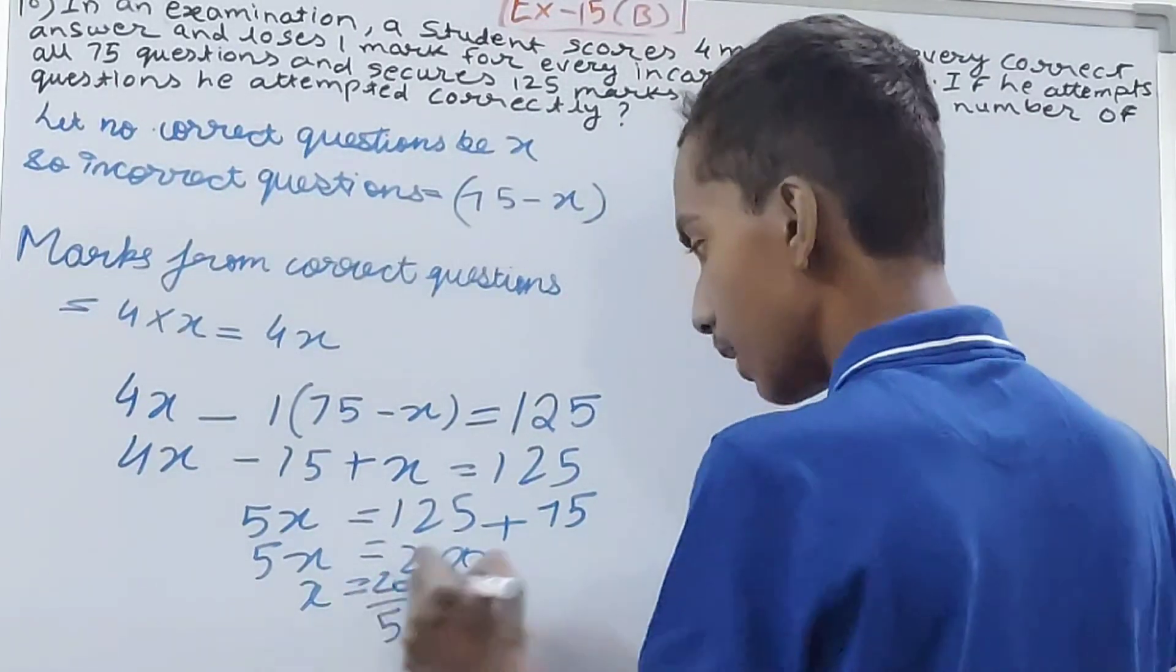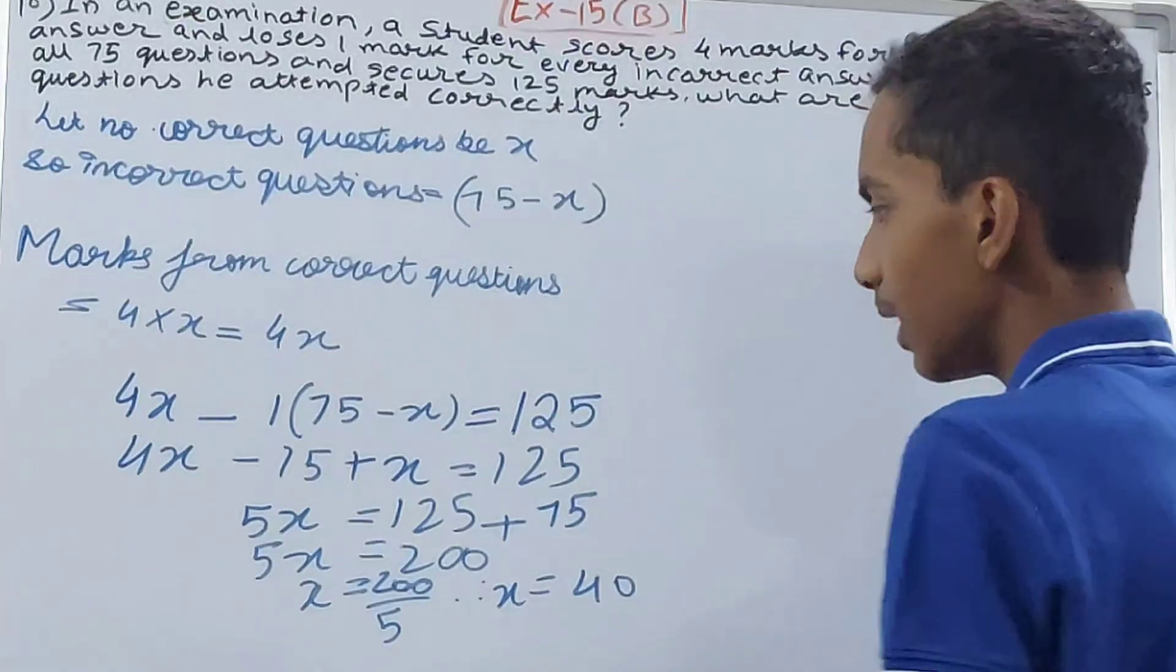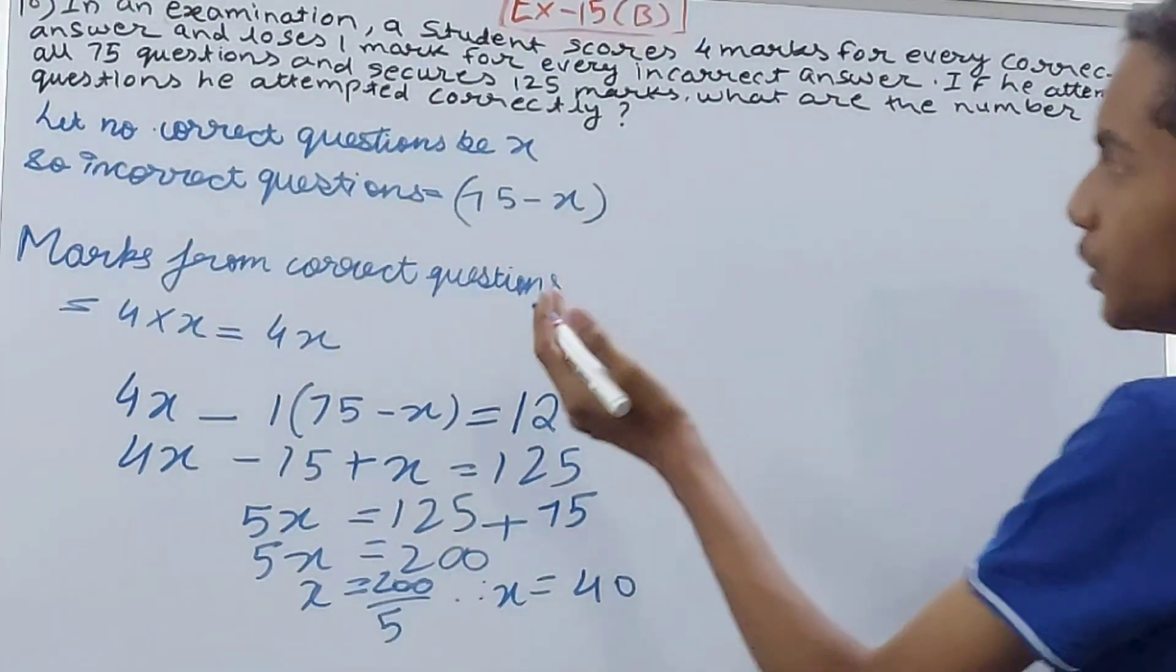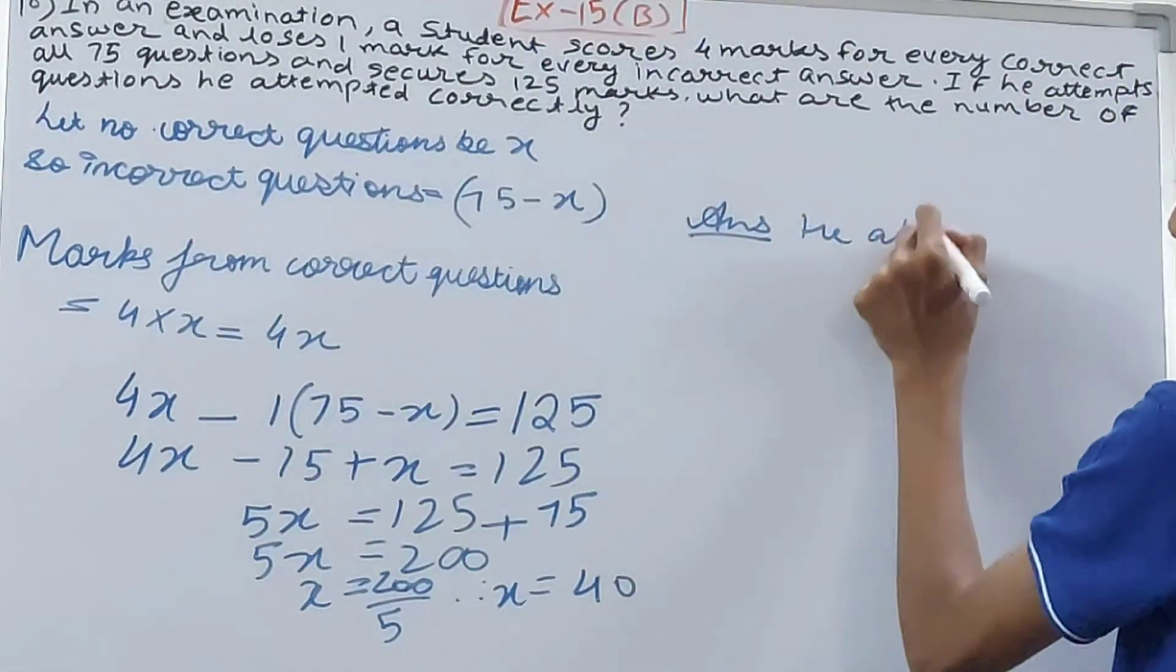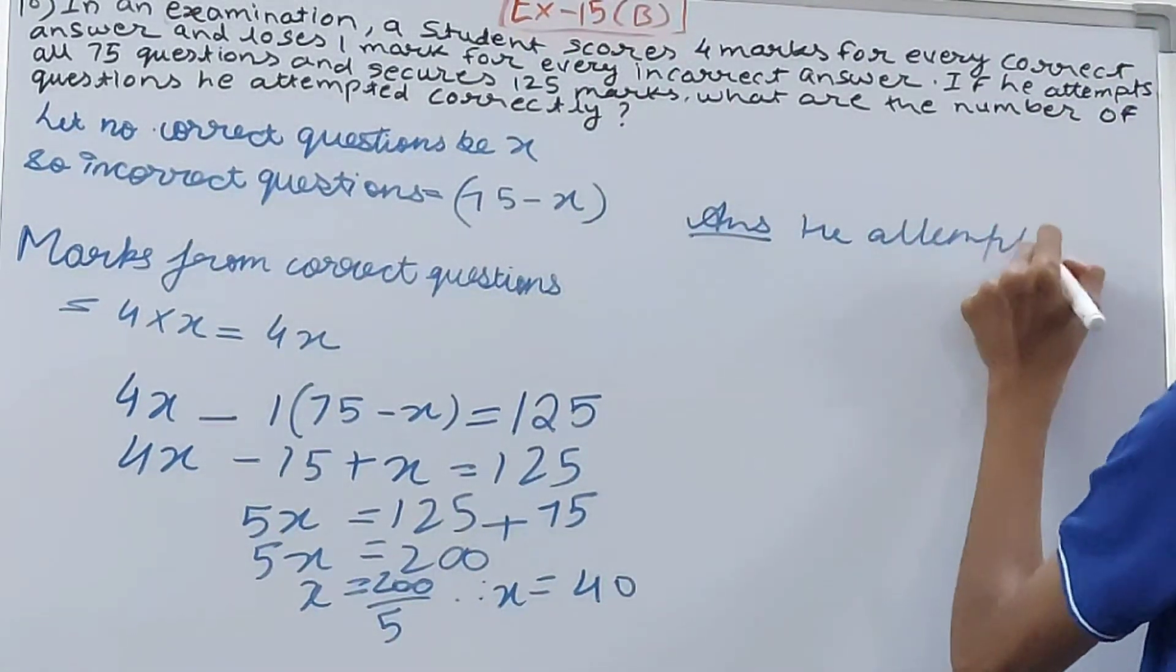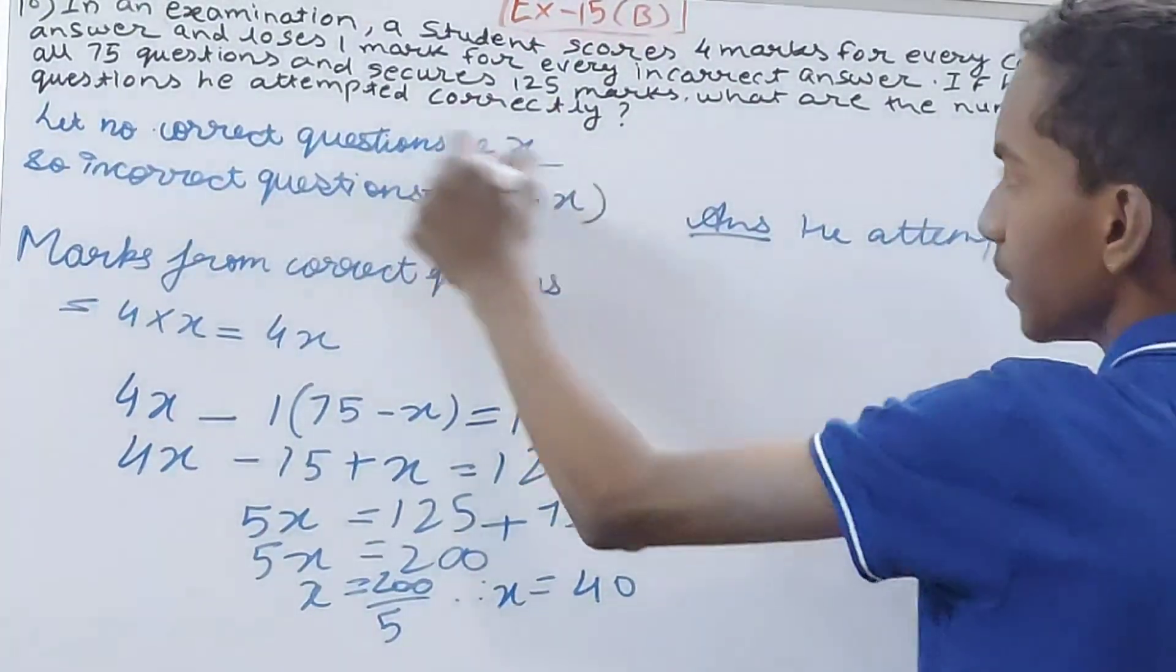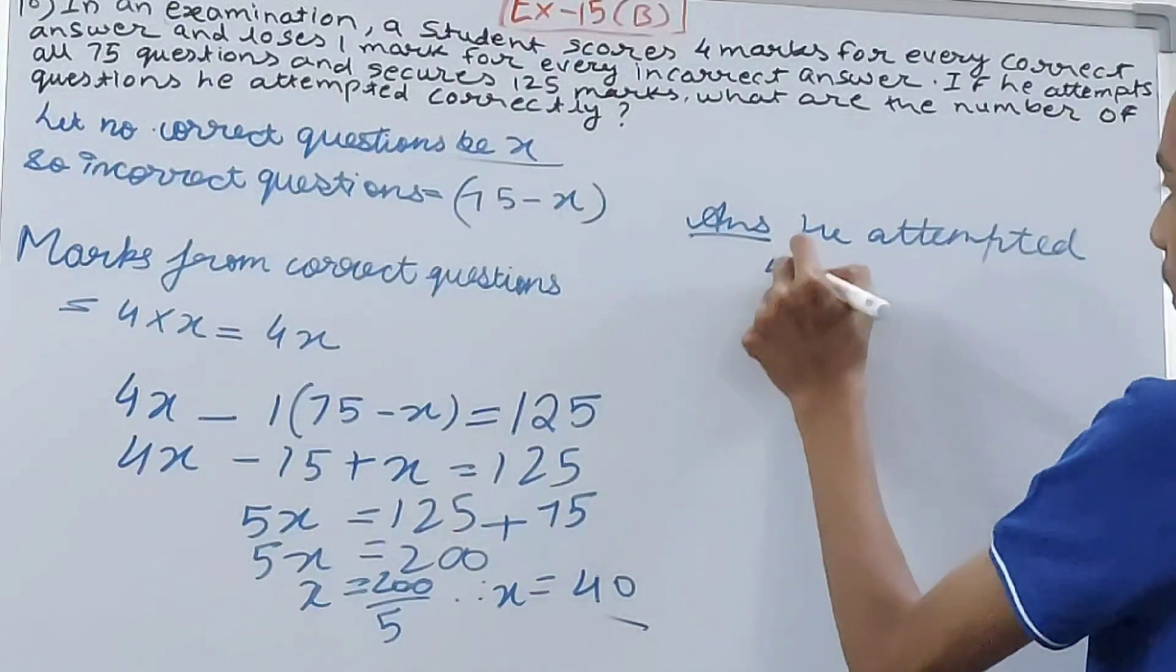The value of x is 40. And what is asked here? What are the number of questions he attempted correctly? So your answer is: he attempted 40 questions correctly, because we have assumed let the number of correct questions be x, and x is 40.